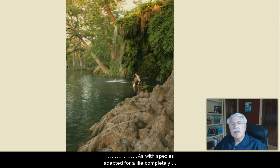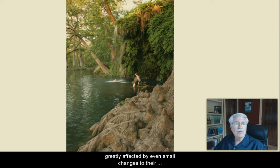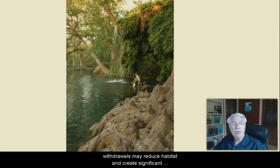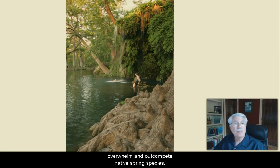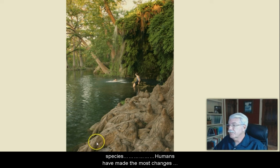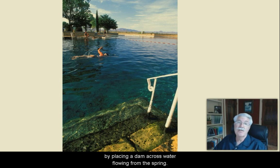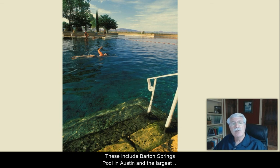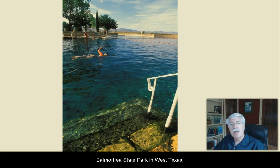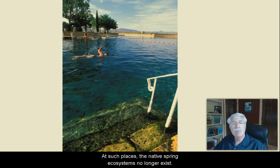As with species adapted for life completely underground, species in spring ecosystems may be greatly affected by even small changes to their habitat. For species in a spring, lower spring flow due to drought or groundwater withdrawals may reduce habitat and create significant stress to the organisms there. Invasive species may quickly overwhelm and out-compete native spring species. Many of Texas' stream ecosystems have been impacted by both flow reductions and invasive species. Humans have also made the most changes to springs. Many of Texas' largest springs have even been turned into swimming pools by placing a dam across water flowing from where the spring originates. These include Barton Springs Pool in Austin and the largest spring-fed swimming pool in the world, pictured here, located at Balmorhea State Park in West Texas. At such places, the native spring ecosystems may no longer exist.